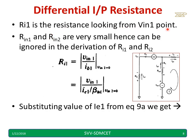Ri1 is a resistance looking from vin1 point. Rin1 and rin2 are very small, hence can be ignored.